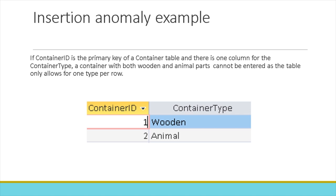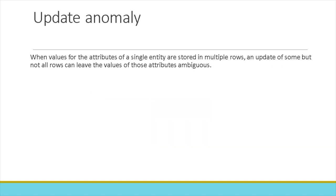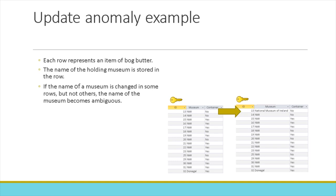An update anomaly occurs when values for the attributes of a single entity are stored in multiple rows. Then an update of some but not all rows can leave the values of those attributes ambiguous. For example, if each row in the bog-butter table represents one item of bog-butter and the name of the museum that holds it is stored in the row, if the name of the museum is changed in some rows but not others, the name of the museum becomes ambiguous. In the example, we've changed the name of the National Museum of Ireland in one row from its abbreviation NMI to the full name, so now we have two names that refer to the same museum.